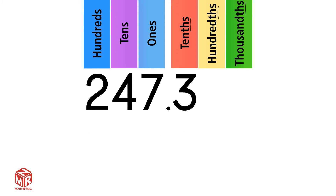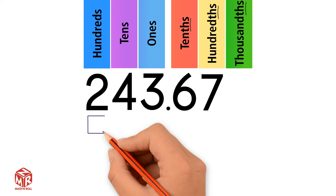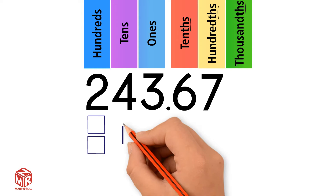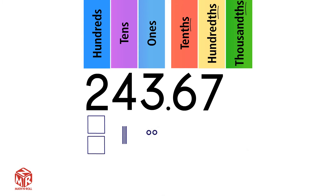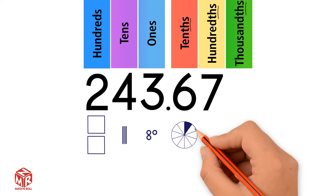Let's try another example. We have 243 and 67 hundredths. Let's draw it out. We have 2 hundreds, 4 tens, 3 ones, 6 tenths, and 7 hundredths. 6 tenths is the same as saying 6 out of 10 parts. We can draw 6 tenths by splitting up a circle into 10 equal parts and coloring in 6 parts.